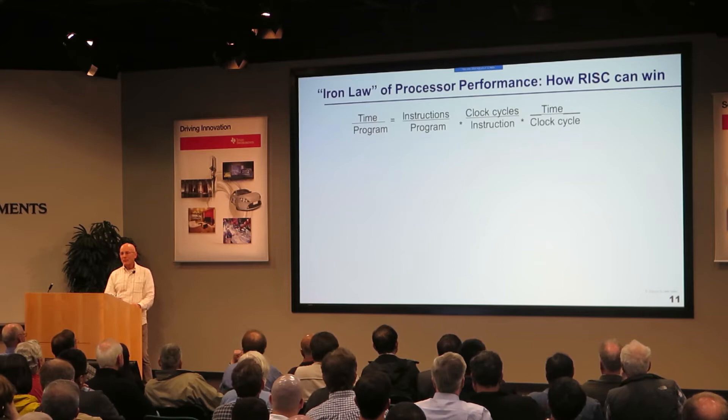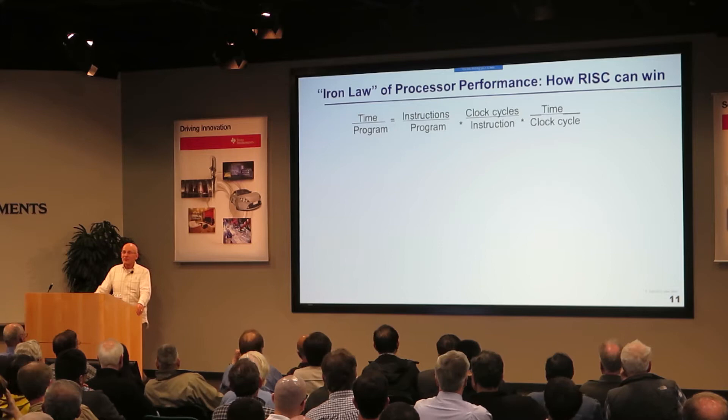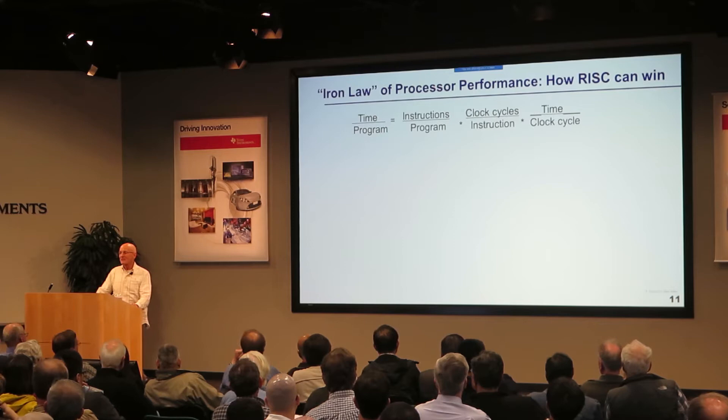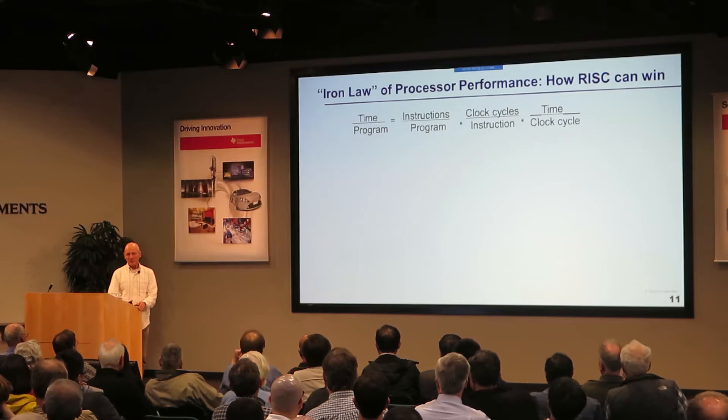In the early 1982–83 period there were terrific debates at conferences about RISC versus CISC. One problem was we didn't have a scientific explanation for why RISC was better — we figured that out later. My colleague John Hennessy wrote the first paper about this. The insight that helped explain why RISC could make sense is this formula: time per program equals the number of instructions executed per program, times the average number of clock cycles per instruction, times the time per clock cycle.